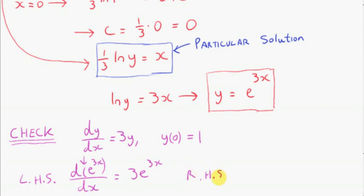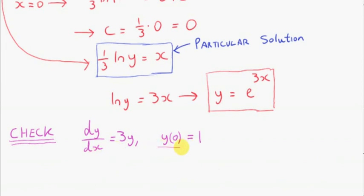Now, what about the right-hand side of the differential equation? The right-hand side is 3 times y. So 3y is just 3 times e to the 3x. So you can see that left-hand side and right-hand side are the same. What about the boundary condition? Let's get y at 0 — we plug 0 in for x. That's e to the power of 3 times 0, which is just e to the power of 0, which is 1. So y of 0 is indeed 1.